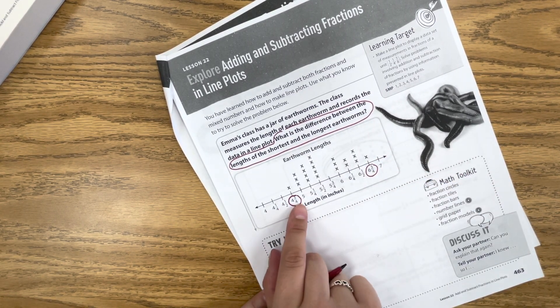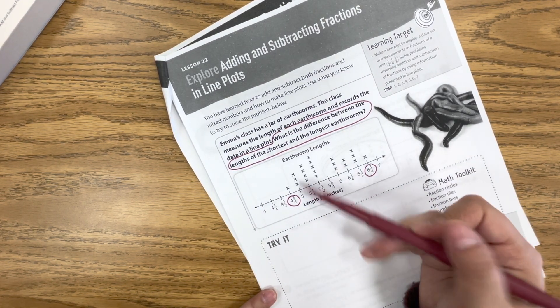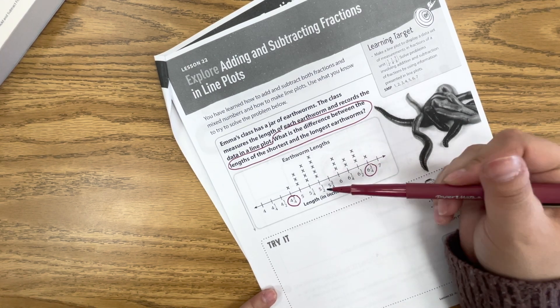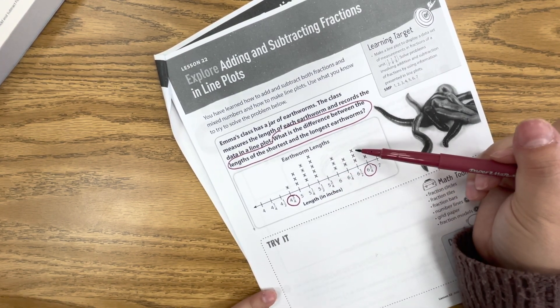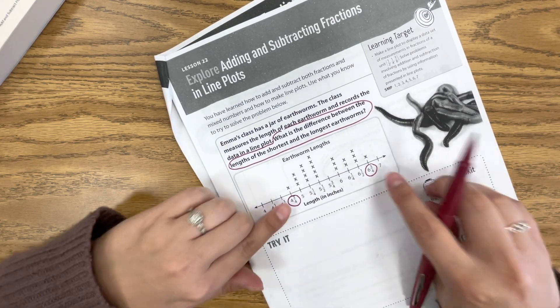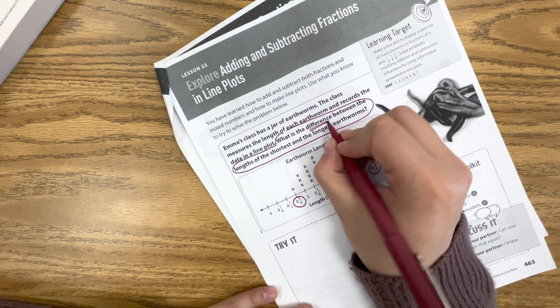We don't have a 7, and we don't have anything below 4¾ because there's not an X there. So it looks like we have 3 at 5, 4 at 5¼, 1 at 5¾, 5 at 5½, 3 at 6, 2 at 6¼, 3 at 6½, and then just 1 again at 6¾. So these are definitely our smallest and our biggest, and we need to find the difference, meaning we have to subtract.